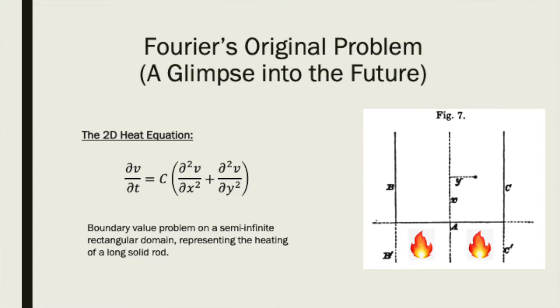Fourier's original problem was to determine solutions of the two-dimensional heat equation over a semi-infinite rectangular area, as shown here. The so-called heat equation is a linear, second-order, homogeneous, partial differential equation.